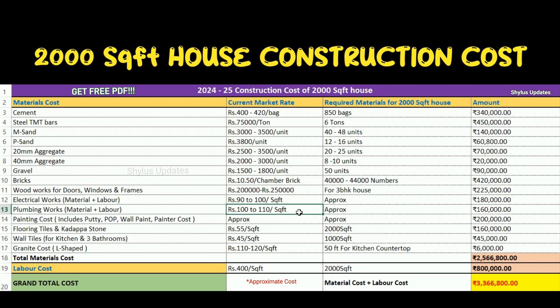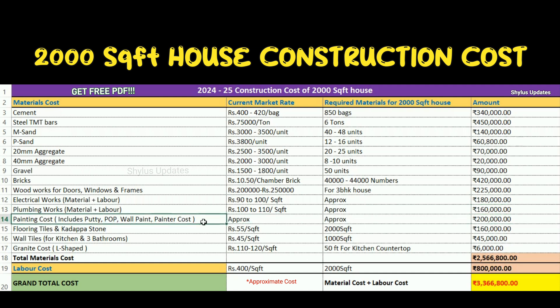Plumbing work: ₹100 to ₹110 per square feet. The total amount for plumbing work is ₹1,60,000. This plumbing work cost covers both material and labor. Painting cost: ₹2,00,000. This painting cost includes putty work, POP (plaster of Paris), wall paint, and painter charges.